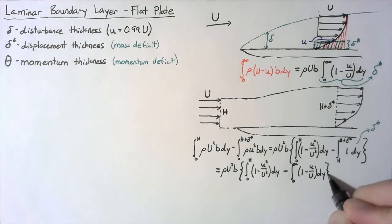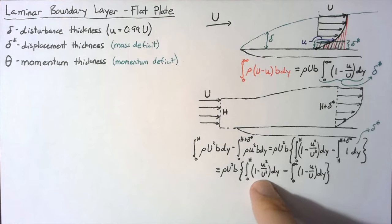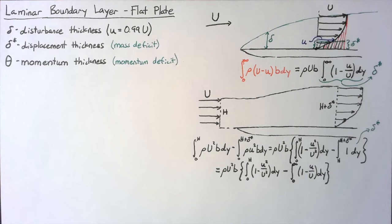The trick here is that since we're talking about deficits and we've defined h in such a way that it's far enough above our disturbance thickness, then there's no actual contribution for this integral all the way from h to infinity. So we can replace this h with infinity with no ill effect, and now the integration bounds match so we can just add these together.